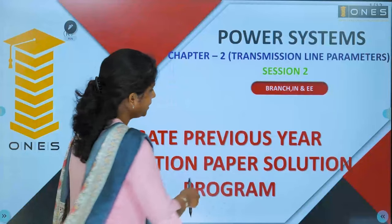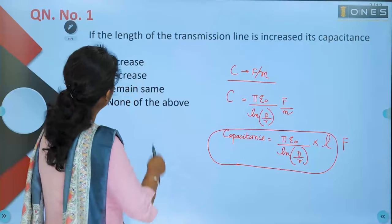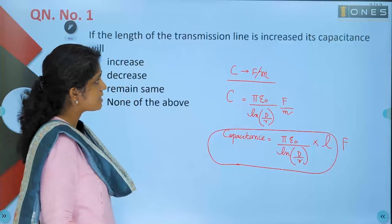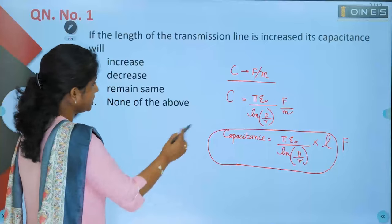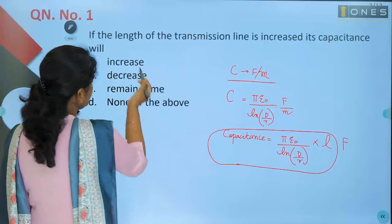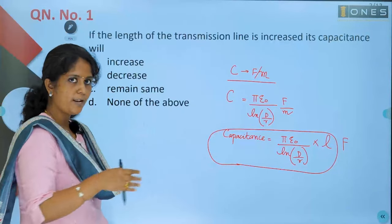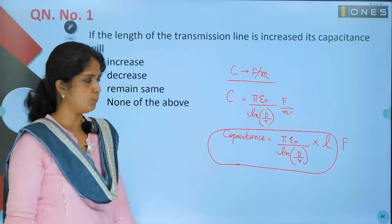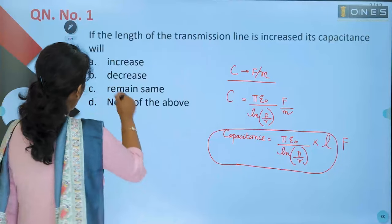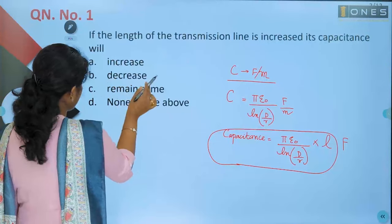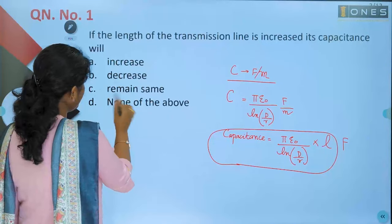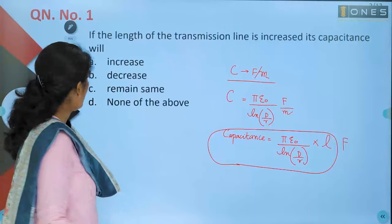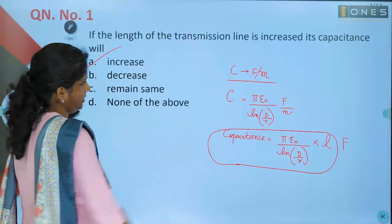Since capacitance is directly proportional to the length, if the length of the line is increased, the capacitance will increase proportionally. So option A — increase — is the answer.